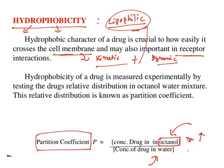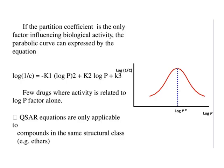If the drug concentrates more in the water phase, it is low lipophilic or more hydrophilic in nature. This is how you get log P values. For the majority of drugs, increasing log P increases activity, as shown by the straight-line relationship.